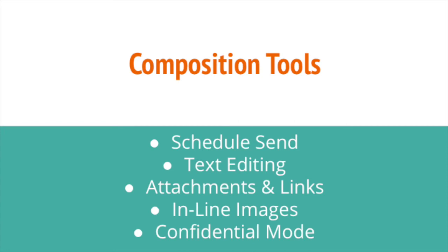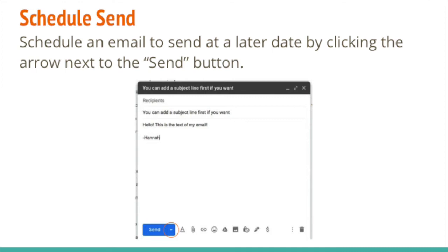Next I'm going to go through the composition tools that Gmail offers. You can schedule an email to send at a later date — a nice feature especially if you're up later than you should be writing emails and you'd rather it appear to go out at 8am the next day. All you need to do is click on the little arrow right next to the word 'Send.' Instead of clicking Send, click the arrow, and that will allow you to schedule a send. It will give you a list of options or you can enter any date and time. You will need to have a recipient already entered before it will let you schedule it.